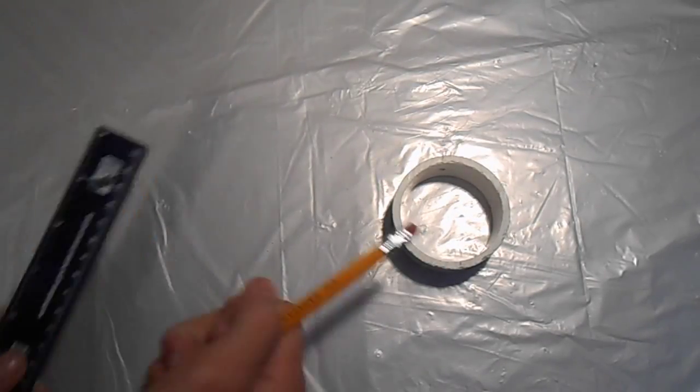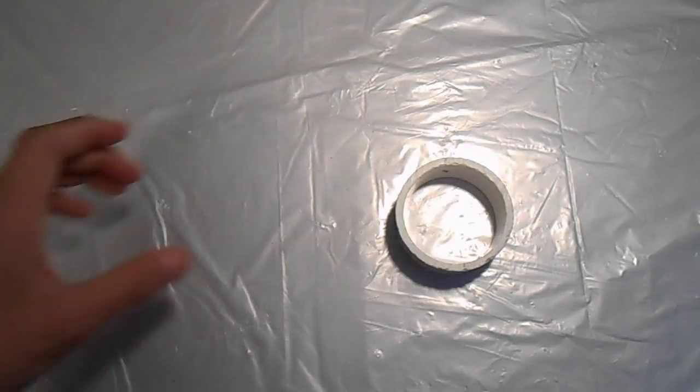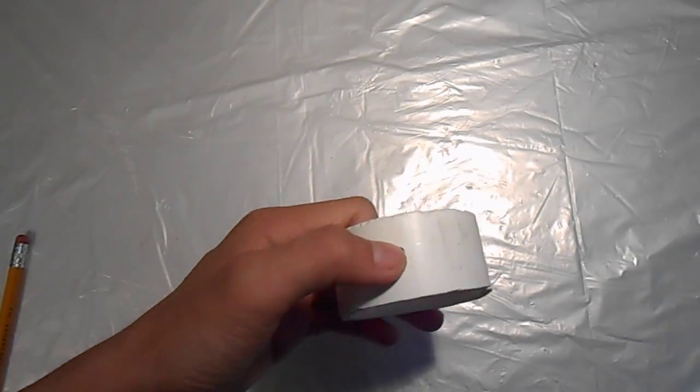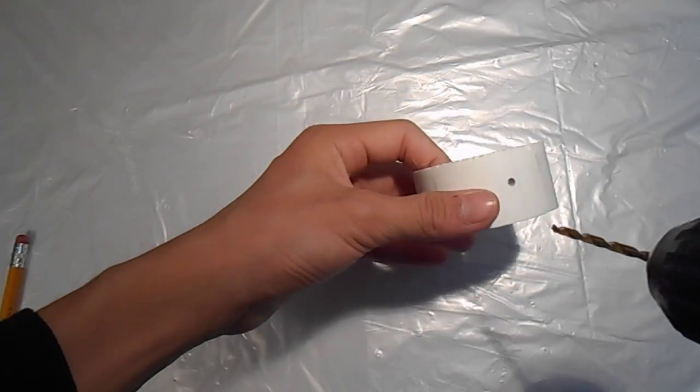Step number nine. Now take your two-inch PVC pipe, and measure across like you did with the other ones. And you'll be drilling holes in this one. You'll be drilling it with the 9/64 inch drill bit. On this one, you'll only need to drill two.